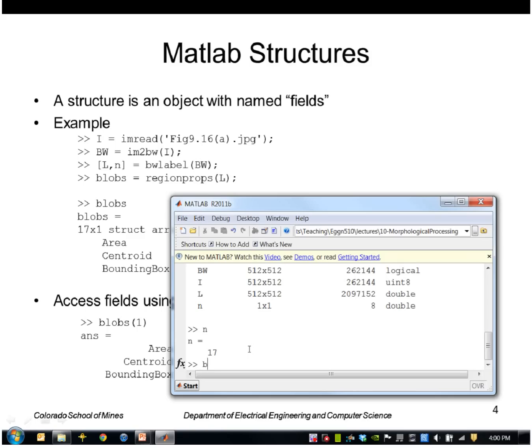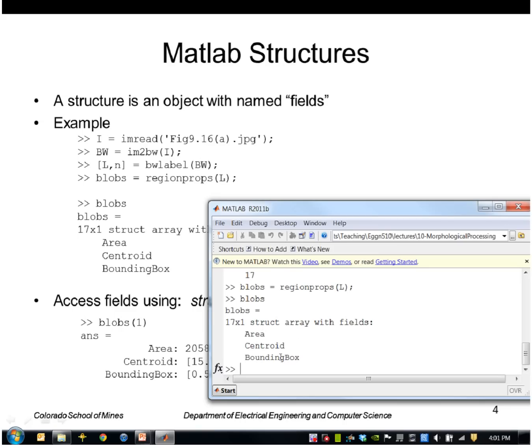So the result of region props. I pass in L and blobs is an array of structures. It has 17 structures in that array. Each structure has these fields: area, centroid, bounding box.